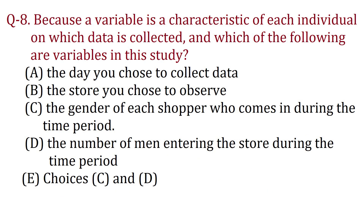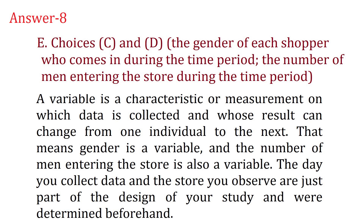Question 8: Because a variable is a characteristic of each individual on which data is collected, which of the following are variables in this study? Choice A: the day you chose to collect data. Choice B: the store you chose to observe. Choice C: the gender of each shopper who comes in during the time period. Choice D: the number of men entering the store during the time period. Choice E: choices C and D. Answer 8: Choice E — choices C and D. A variable is a characteristic or measurement whose result can change from one individual to the next. Gender is a variable and the number of men entering the store is also a variable. The day you collect data and the store you observe are just part of the design of your study and were determined beforehand.